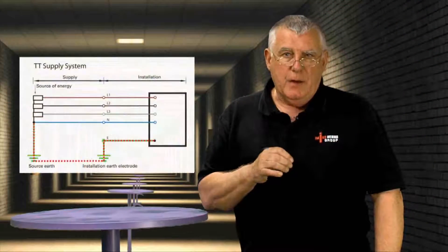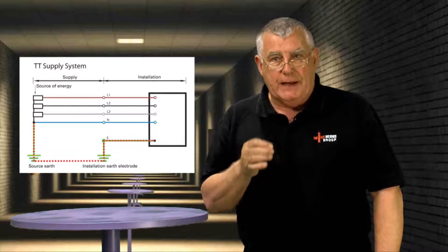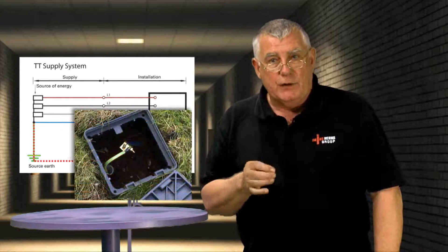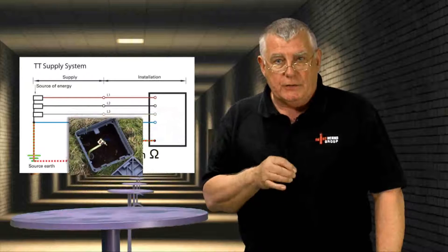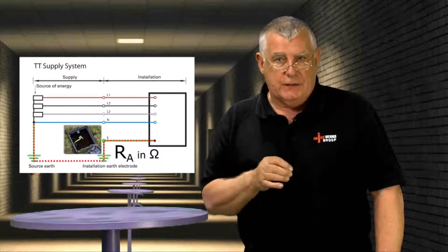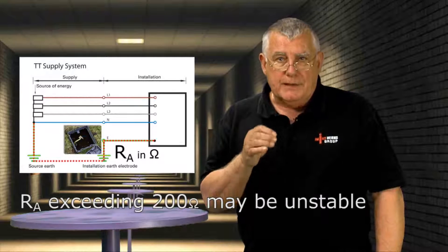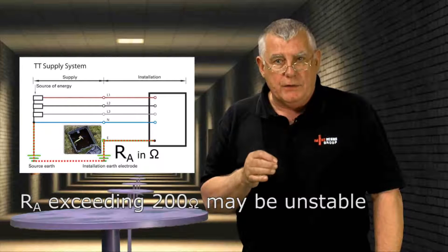With a TT system, part of the earth return path back to the generator or transformer is not provided by a dedicated conductor, but actually through the mass of earth itself. The resistance of an earth electrode, RA, is likely to be much higher than the value of ZE we discussed earlier for a TN system. In fact, the regulations only recommend that the resistance of an earth electrode be as low as practical and that a value exceeding 200 ohms may not be stable. So on a TT system, earth fault currents aren't always going to be of high magnitude, which may mean that the maximum disconnection times may not be achievable using protective devices such as fuses or circuit breakers.